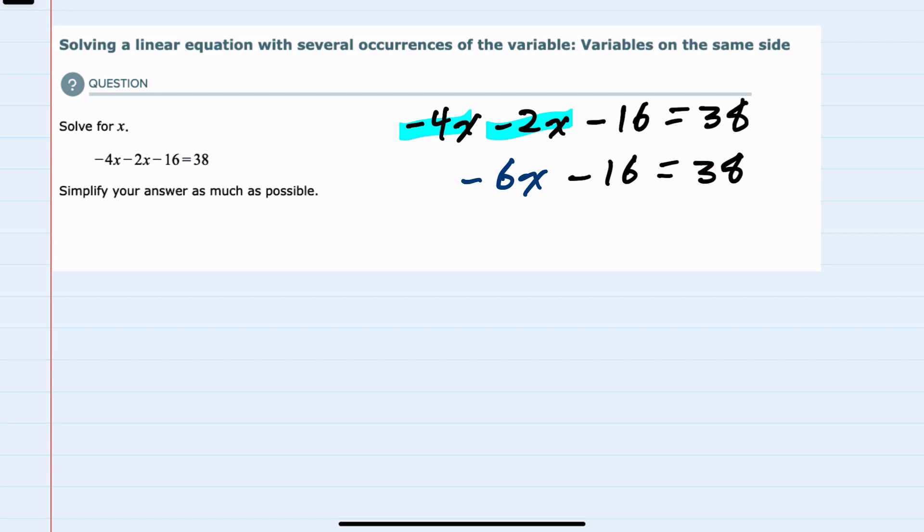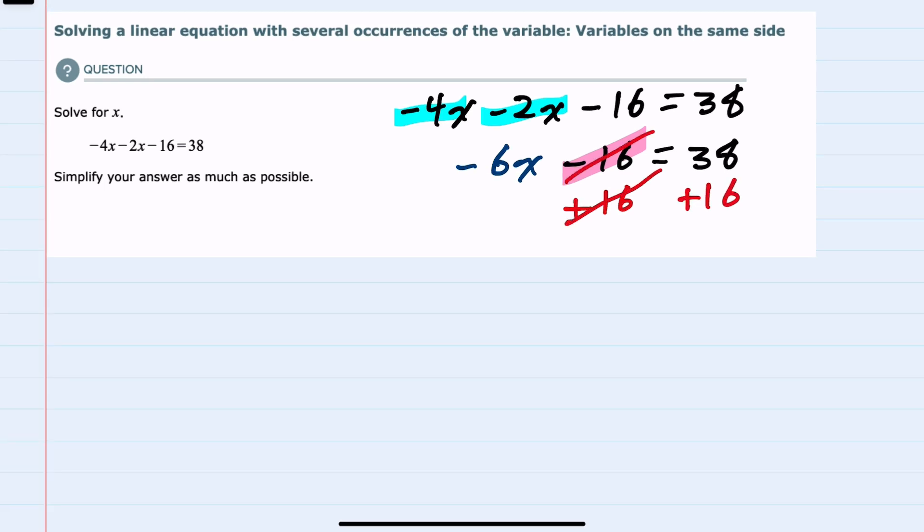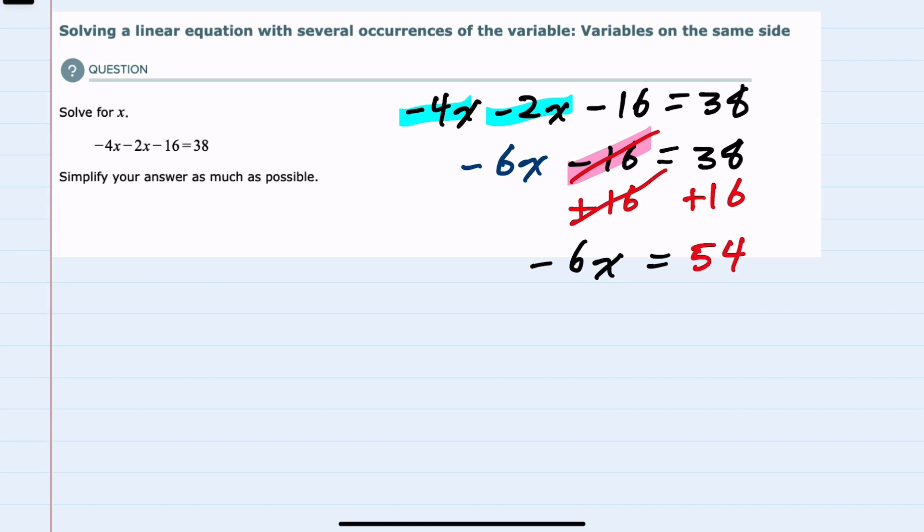And here I can do so by moving the 16 over to the other side of the equation by adding 16 on the left hand side and the right hand side. On the left, those 16s will cancel, leaving me with just the minus 6x. On the right hand side, the 38 and 16 will add to be 54.